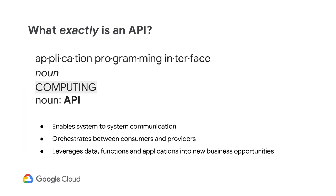I often get this question from my customers at the start of an engagement: What is an API? The formal definition of API is defined as application programming interface. It is a way for systems to communicate with each other. It leverages and reuses data, functions, and applications, and combines them into new business opportunities.